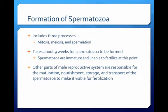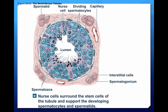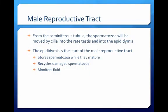The spermatozoa, however, are not physically mature and cannot yet fertilize an oocyte or a female gamete. Other parts of the reproductive system are responsible for the maturation, nourishment, storage, and transport of the sperm to make them viable for fertilization. On this diagram, note the spermatogonia are the outermost cells of the seminiferous tubule, and that the spermatozoa are the innermost cells that contain flagella and are suspended within the cytoplasm of the nurse cells. Also identify the dividing primary and secondary spermatocytes and the spermatids. Note that as cells develop from spermatogonia to spermatozoa, the new cells move closer to the lumen of the seminiferous tubule. Once detached from the wall and released into the lumen, the spermatozoa will be moved by cilia into the rete testis and into the epididymis.